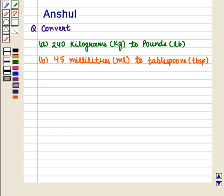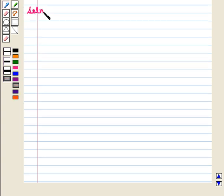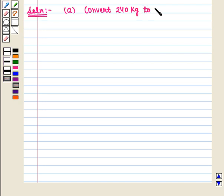Hello and welcome to the session. In this session we are going to discuss the following question: Convert part A, 240 kilograms to pounds, and part B, 45 milliliters to tablespoons. Now let us start with the solution of the given question. In part A we have to convert 240 kilograms to pounds.